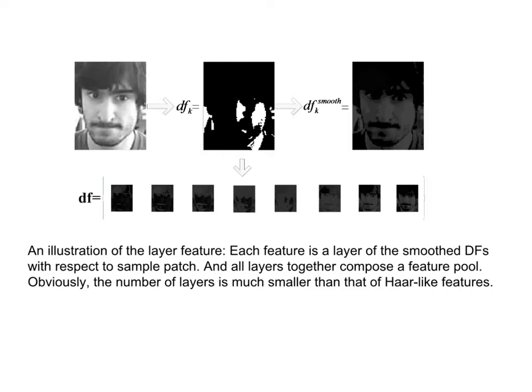In this paper, each feature is a layer of the smoothed distribution fields with respect to the sample patch, and all layers together compose a feature pool. The number of layers is much smaller than that of Haar-like features. We use the weighted geometric mean ML model to select the discriminative layer features to train the classifier.